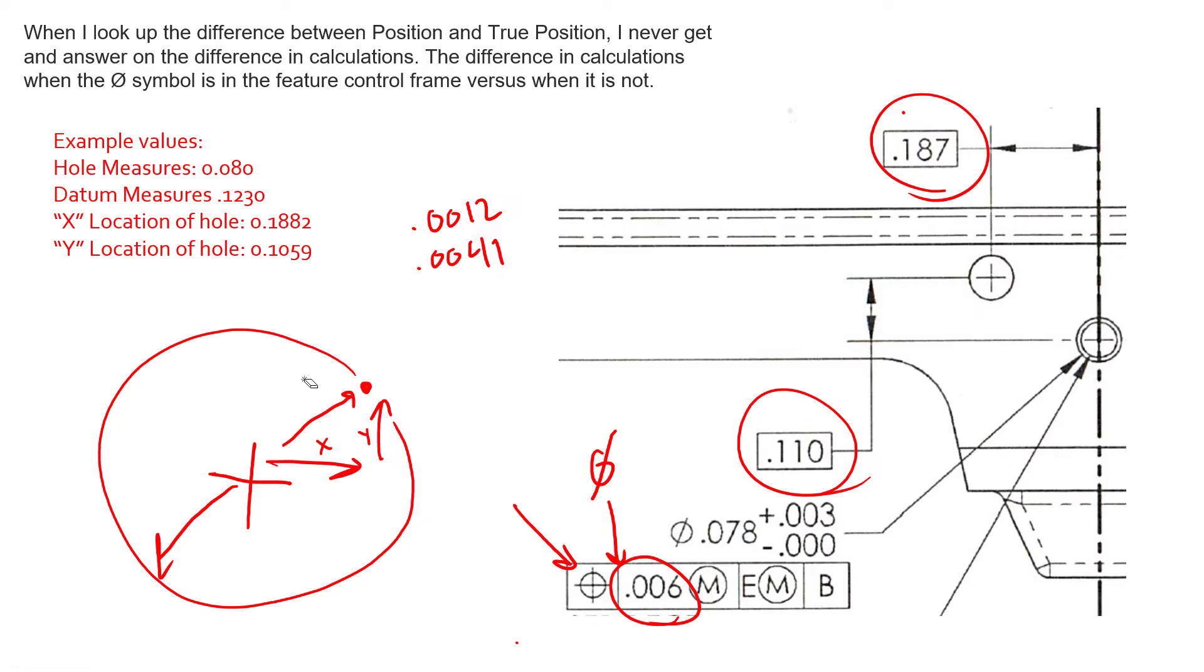So the equivalent diametric deviation for these two values would be 0.0012 squared plus 0.0041 squared, square root of that, multiplied by two, and that equals 0.0085.